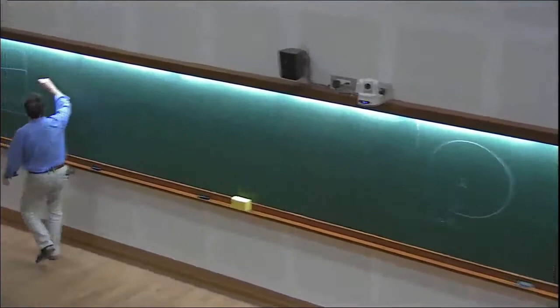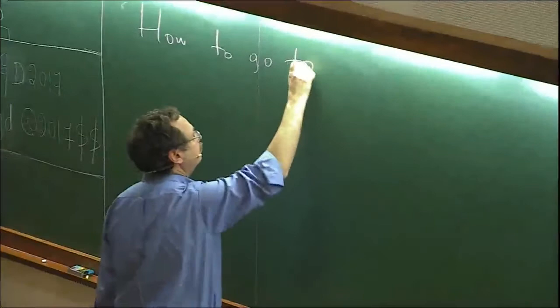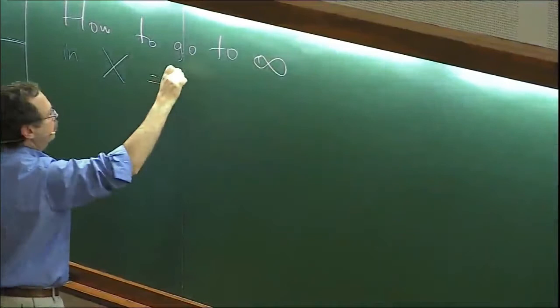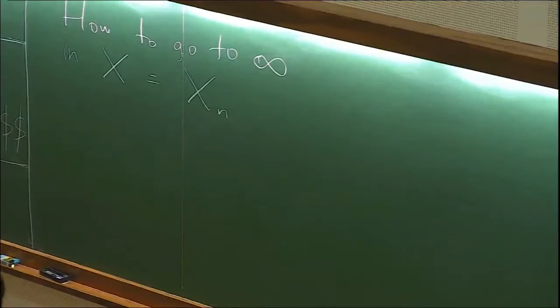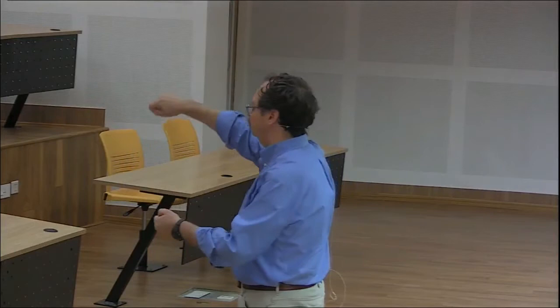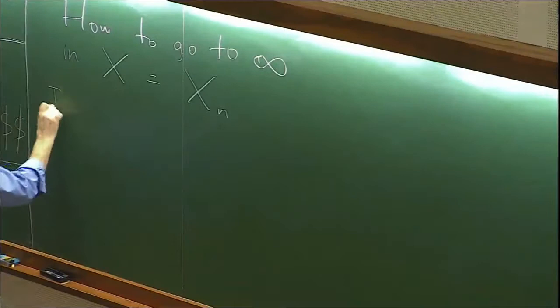Our next objective is to understand how to go to infinity. Keep in mind the example of symmetric n by n positive definite matrices - that's a good example to concentrate on. So what does it mean to diverge to infinity? If you think about the hyperbolic plane, a sequence diverges to infinity just means the distance to the origin goes to infinity, and you might encounter some limits on the boundary sphere.